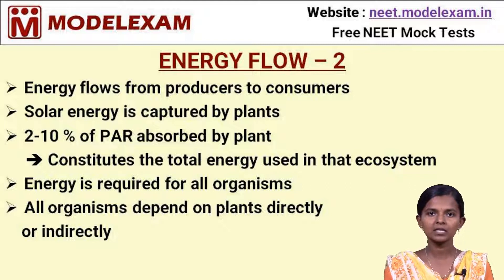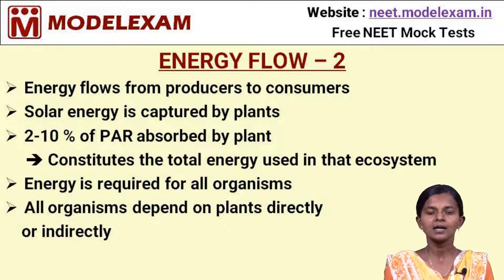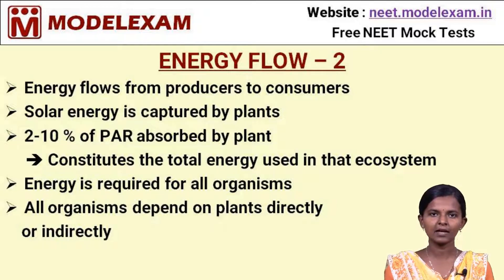All organisms in an ecosystem depend on plants for food, nutrient consumption, and energy. This dependence can be direct or indirect. For example, a grasshopper consumes a plant directly, which is a direct use of energy. There are also organisms that use the energy of plants indirectly. This is how energy flows from producers to consumers.